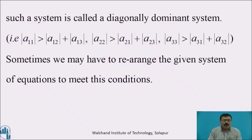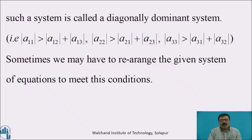That is, mod of a11 is greater than mod of a12 plus mod of a13. Mod of a22 is greater than mod of a21 plus mod of a23. Mod of a33 is greater than mod of a31 plus mod of a32. Sometimes, you may have to rearrange the given system of equations to meet this condition.